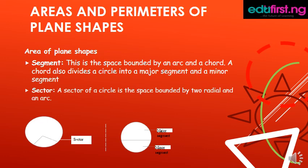A sector of a circle is the space bounded by two radii and an arc. You can see the diagram on your screen. We have the diagram of the sector and we have the diagram of the segment.